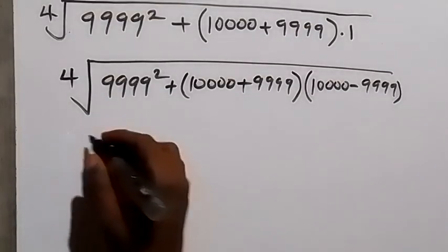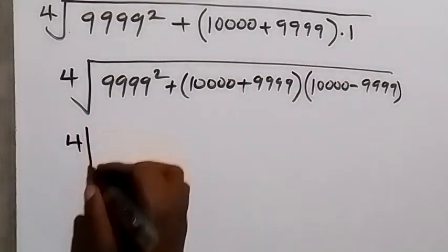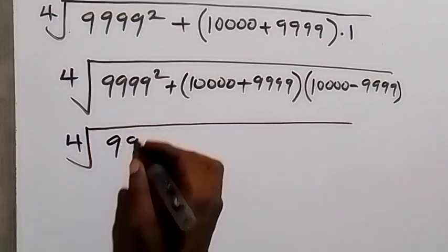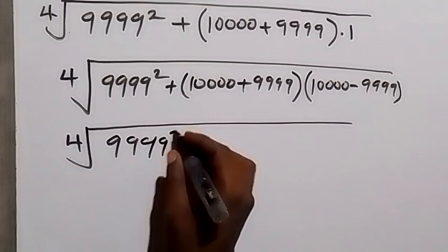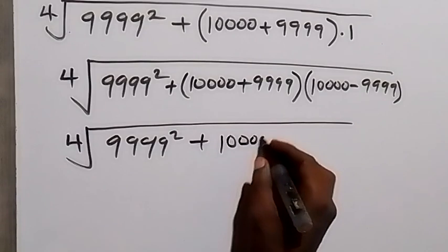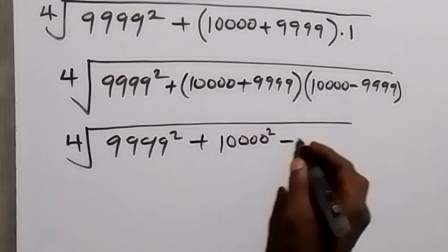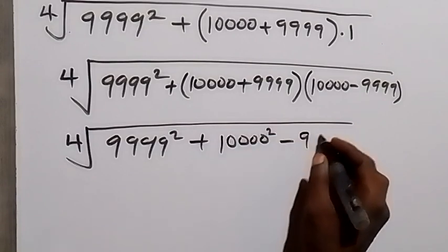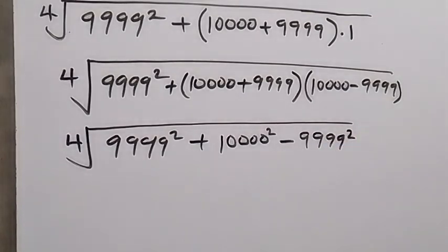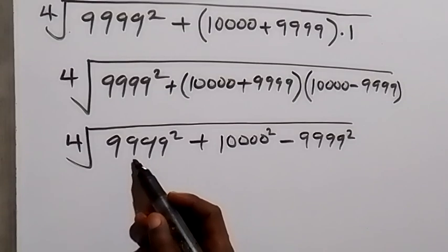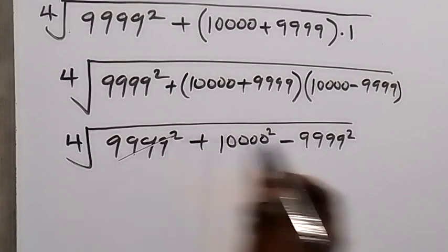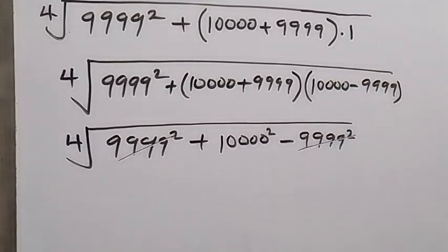So we have the fourth root of 9,999 squared plus these two brackets, which become 10,000 squared minus 9,999 squared. From here, the 9,999 squared terms cancel each other out.